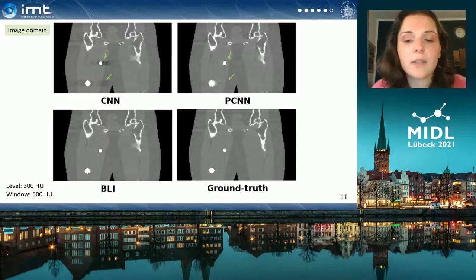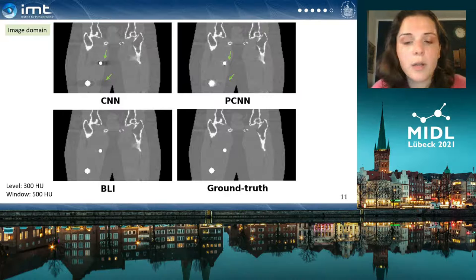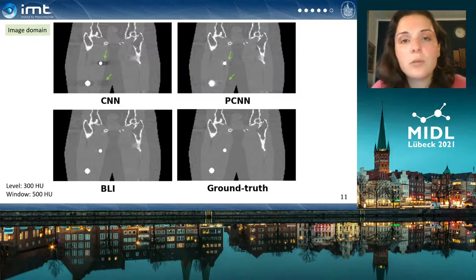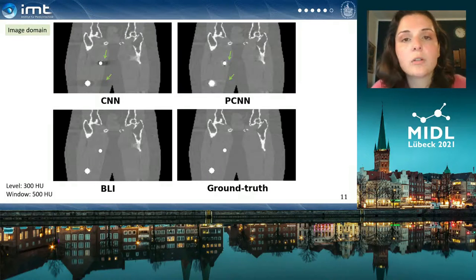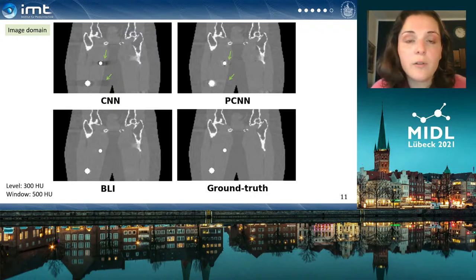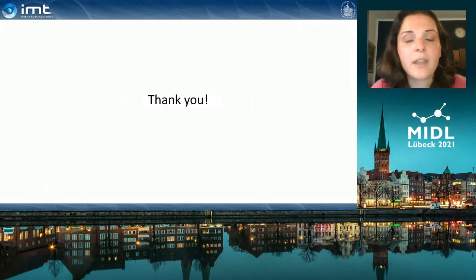Of course, these results are not yet optimal when we look at the ground truth in the lower right image. But we conclude that partial convolution indeed works better for the inpainting task, and thus we can include the partial convolution layer in other networks as well for our further research. Thank you so much for your attention.